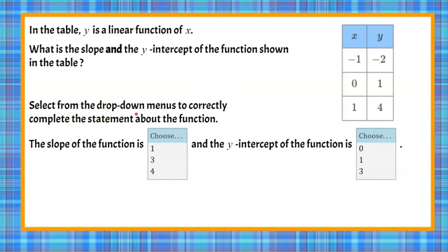Select from the drop-down menus. Here are your two drop-down menus to correctly complete the statement about the function. The slope of the function is choose 1, 3, or 4, and the y-intercept of the function is choose 0, 1, or 3.